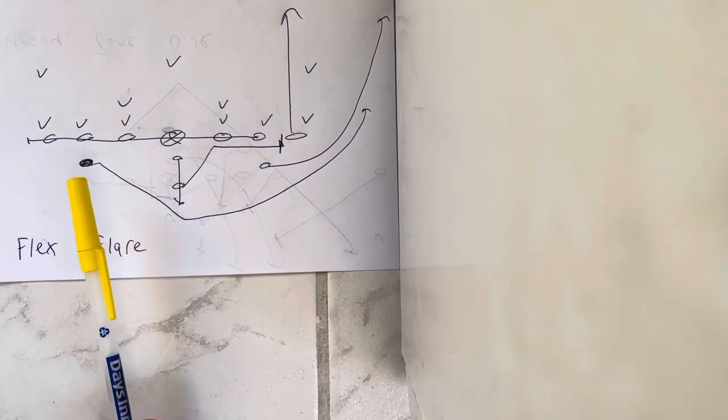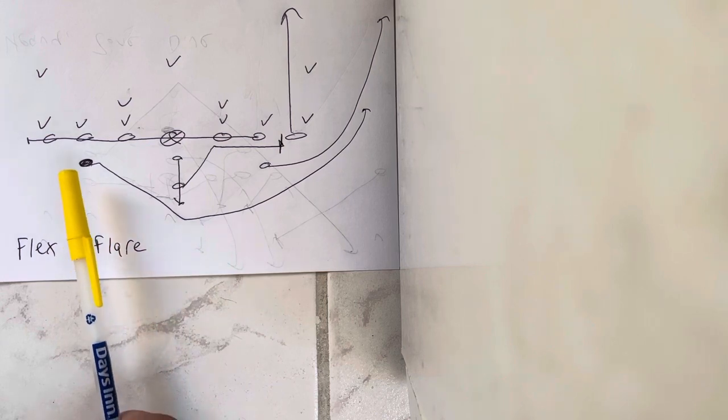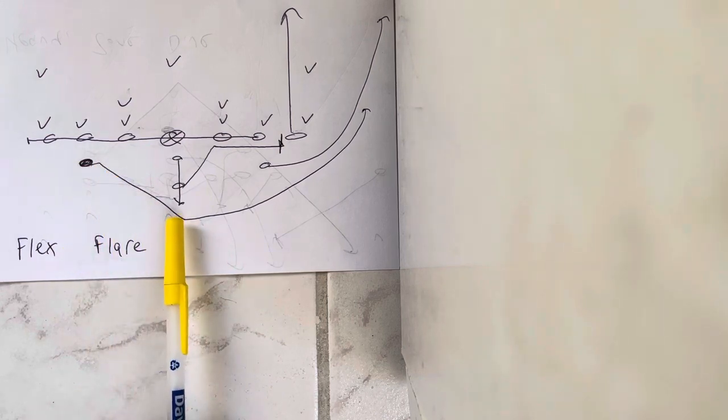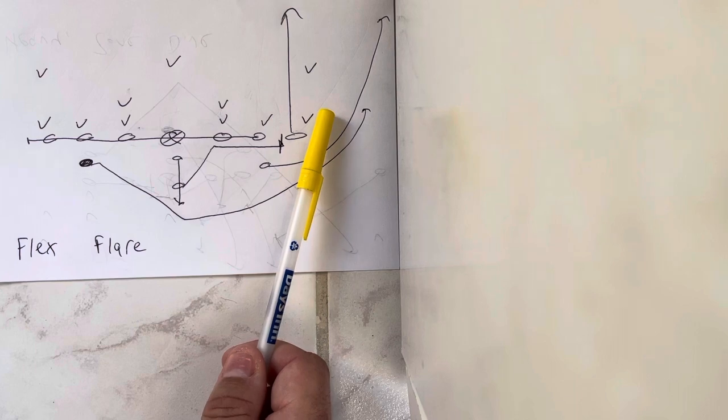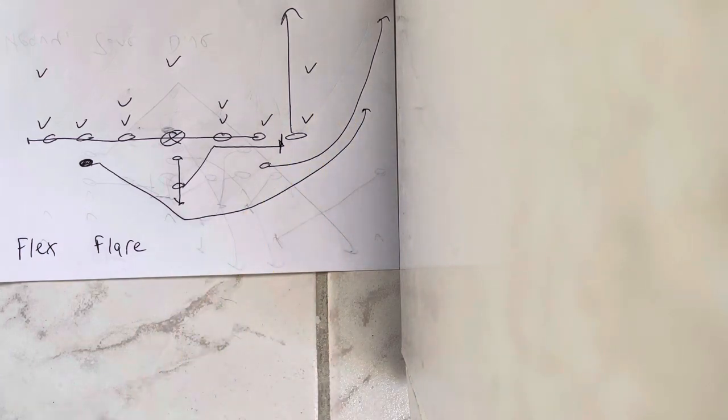The A-back is going to leave just before the snap. He's going to hammer step. He's going to take two 35-degree steps. He's going to take three steps at 90 degrees, and then he's going to flare, and he's basically going to flare up to the numbers.